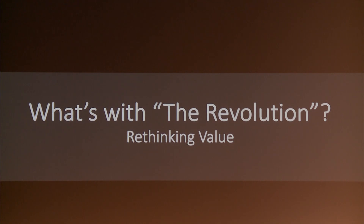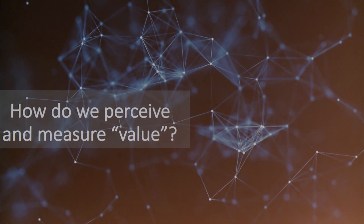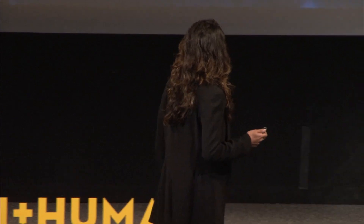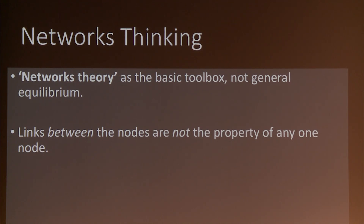We hear a lot of people at conferences talk about the blockchain revolution. Thinking about it fundamentally: what are we talking about when we say it is a revolution? To me, it is about rethinking value — how we perceive and measure value is fundamentally changing. What that requires is network thinking, where you consider networks as the basic toolbox for your systems and not linear models like general equilibrium in traditional economics. The reason that's critical is that the links between nodes are not the property of any one node, and that is how the system is more than the sum of its parts.